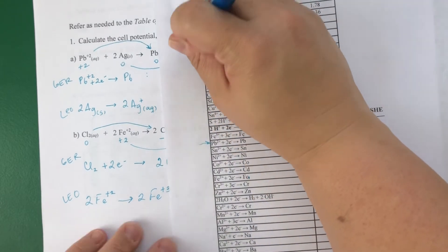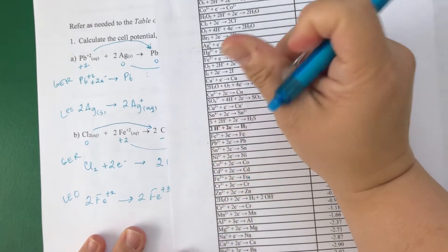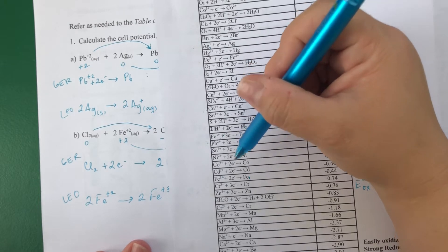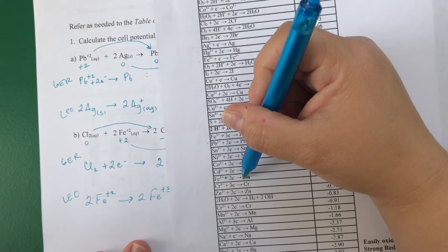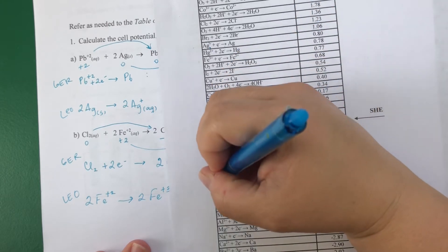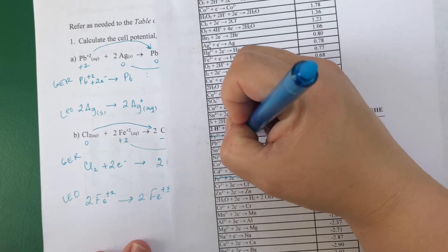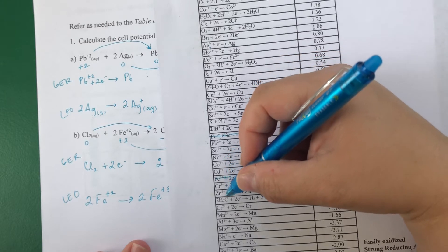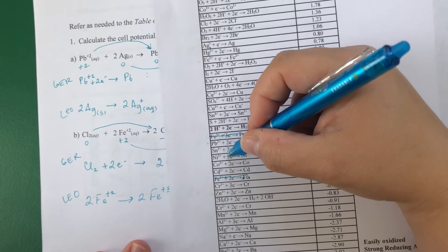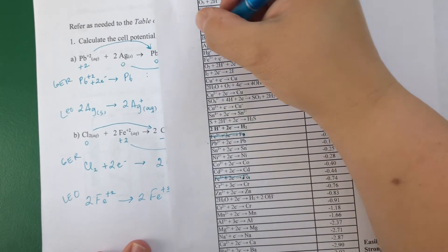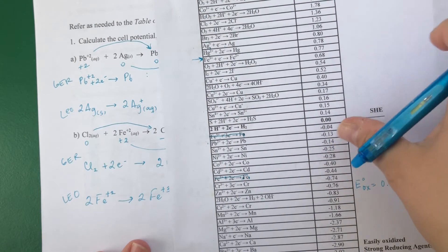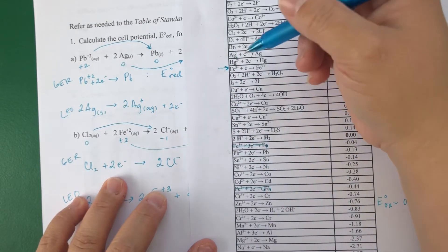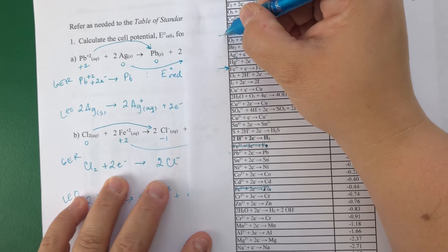So I'm going to use my table again. Hopefully I don't take as long. I have Fe³⁺ to Fe, so that's not it. Fe²⁺ to Fe, that's also not it. Here it is. Fe³⁺ and Fe²⁺. Point 77. Oh wait, I'm going to find that's point 77, and then Cl₂ and Cl⁻, they're right here.